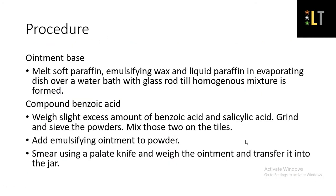First we will see the procedure for preparation of the ointment base. Initially, the ingredients required — soft paraffin, emulsifying wax, and liquid paraffin — are weighed in an evaporating dish and melted over a water bath with continuous stirring by a glass rod until a homogenous mixture is formed. Since we are heating on a water bath, the temperature required is around 75 to 80 degrees Celsius, because all these ingredients have a low melting point in the range of 60 to 70 degrees. Once a homogenous mixture is formed, after cooling, the product obtained is the ointment base, which will be semi-solid in nature.